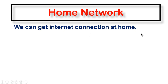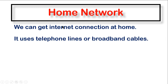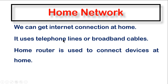Most of these home networks are used to access the internet. The main task or purpose of a home network is to get internet connection at home. These home networks use telephone lines or broadband cables - telephone lines with a modem, broadband, fiber optics, and so on. The device we use inside our home to connect to the network is called the home router.